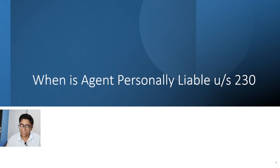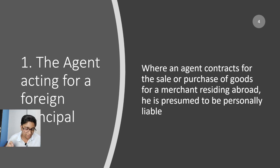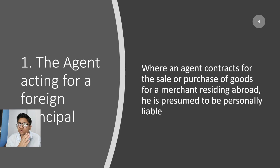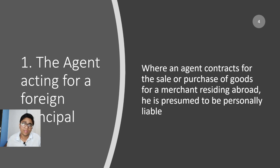Situation number one under Section 230 is the agent acting for a foreign principal. If your principal is sitting in a foreign country where our law does not apply, and something goes wrong, the third party cannot enforce a contract against someone in a foreign land. So the third party's right is against the agent. When an agent contracts for the sale or purchase of goods for a merchant residing abroad, he is presumed to be personally liable.